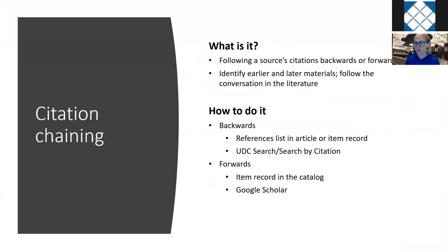Now let's move on to citation chaining. Citation chaining is a method of research in which we follow a particular source's citations either backwards or forwards. In backward citation chaining, we identify earlier materials that have been cited in a particular source. In forward citation chaining, we identify later materials that cite a particular source. For backward citation chaining, find all the bibliographic information of the materials you're interested in, and use that information to search for them. You can get this information from the references list in the article, or in some cases from the item record in the database.